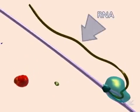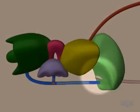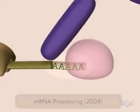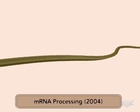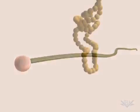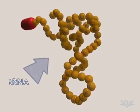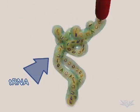The final product of transcription is then spliced and modified into one of three RNA molecules: messenger RNA, or mRNA, transfer, or tRNA, and ribosomal, or rRNA.